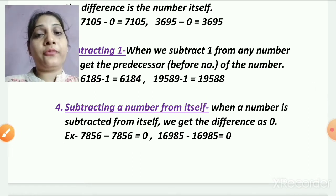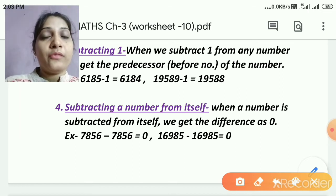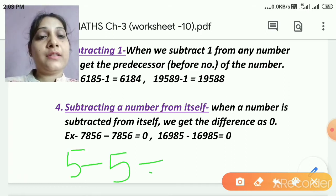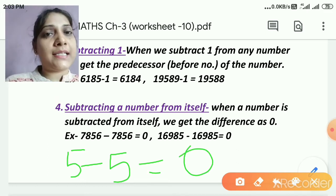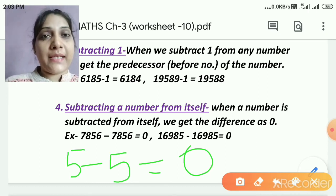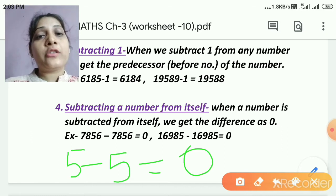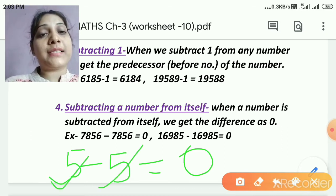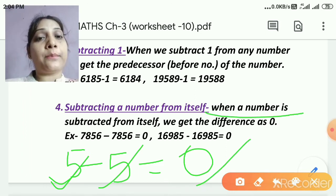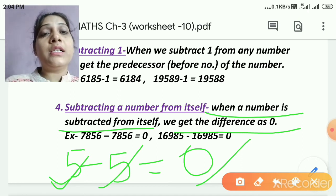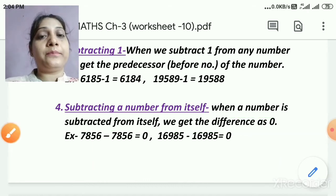Let's move to the next rule: subtracting a number from itself. If we have one number and we subtract the same number from it, like 5 minus 5, we get 0. For example, suppose I have 20 pens and I give all 20 pens to my friend — I have no pens left. So if I subtract a number from itself, the answer is 0. When a number is subtracted from itself, the difference is 0. These are shortcut rules so you can write the direct answer without solving the full calculation.